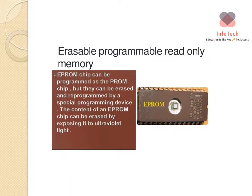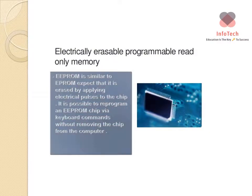EPROM chips can be programmed like a PROM chip, but they can be erased and reprogrammed by a special programming device — that is the key difference between them. The content of an EPROM chip can be erased by exposing it to ultraviolet light.